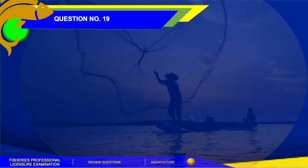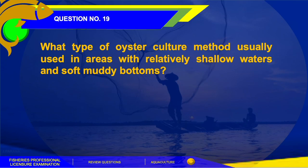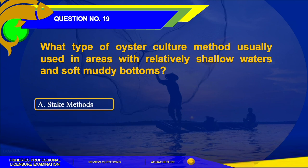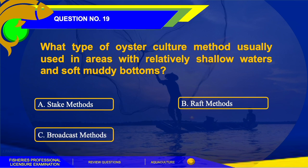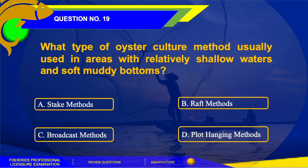Number 19. What type of oyster culture method is usually used in areas with relatively shallow waters and soft mud bottoms? The options are: A. Stick method, B. Rough method, C. Broadcast method, or D. Flat hanging method.